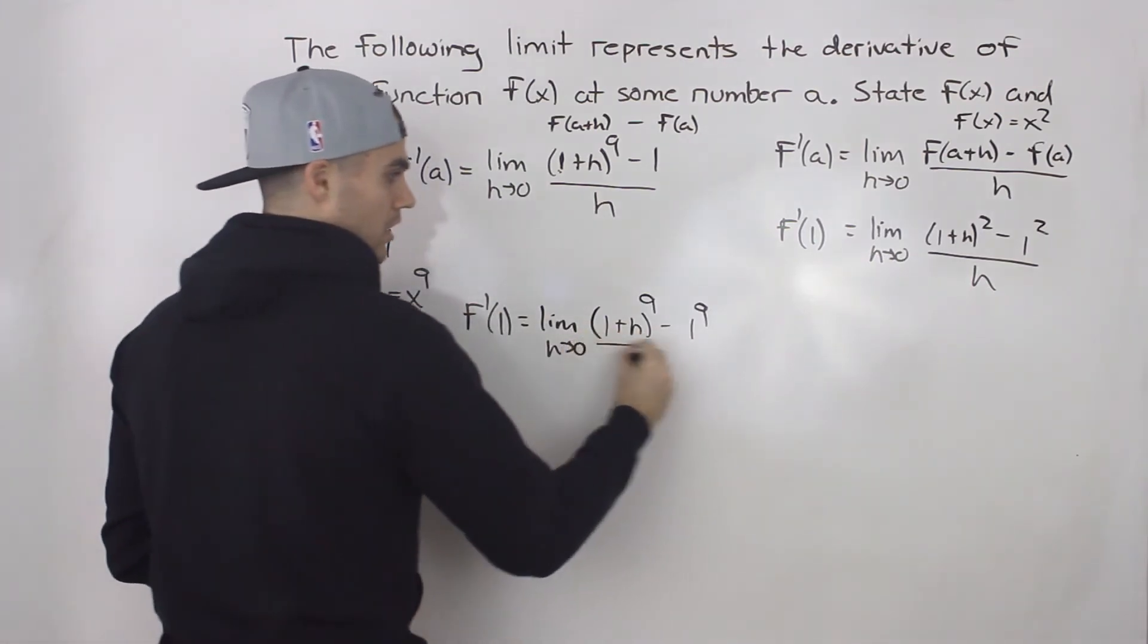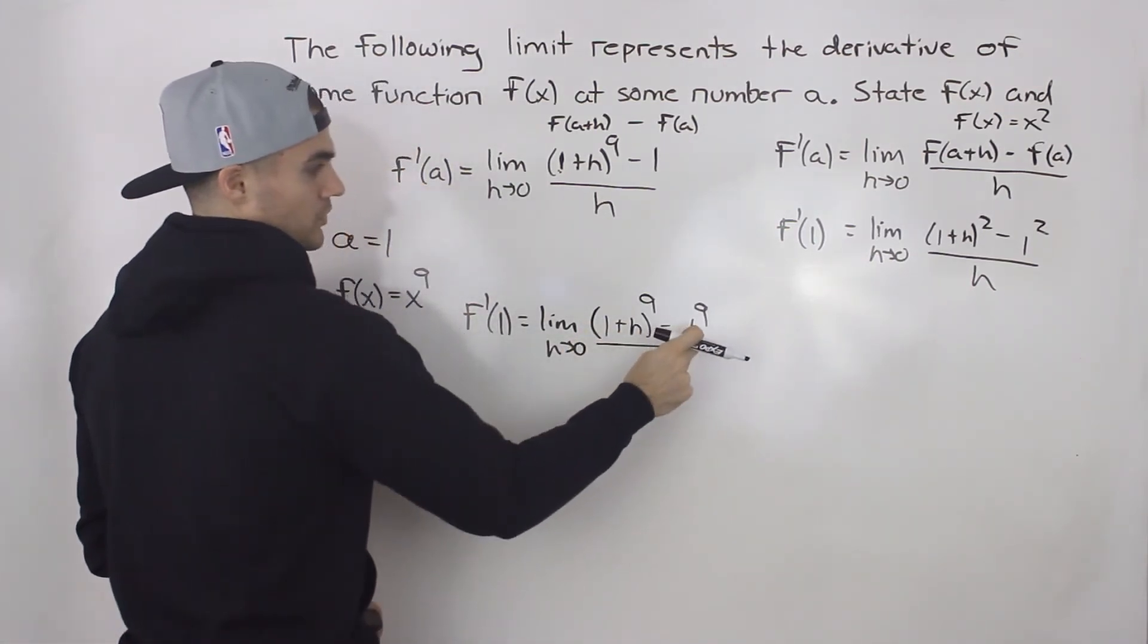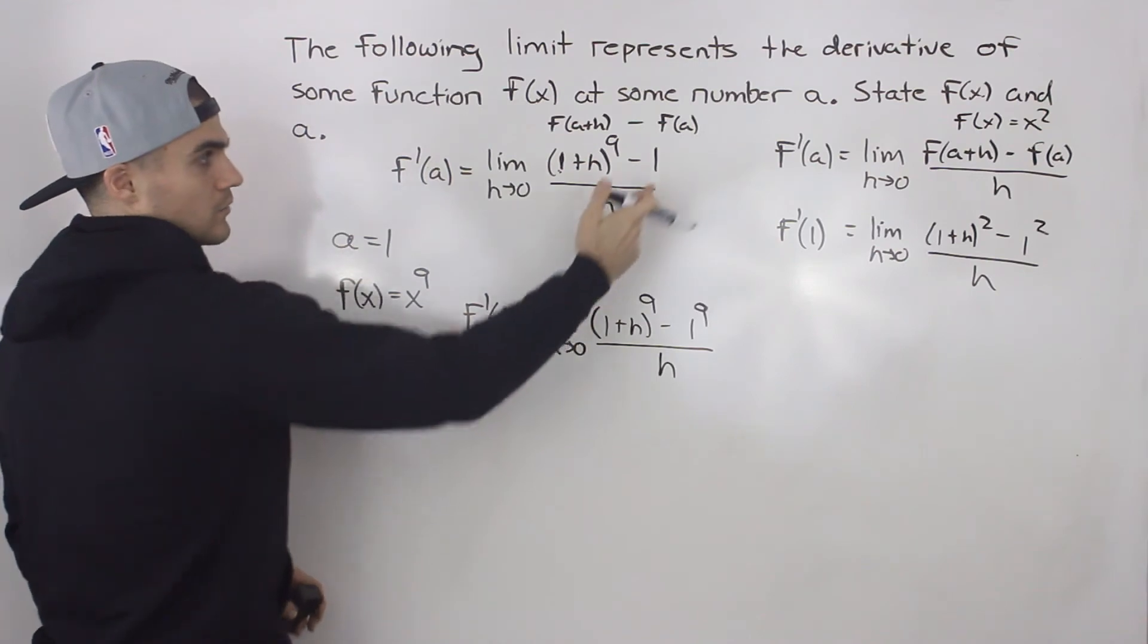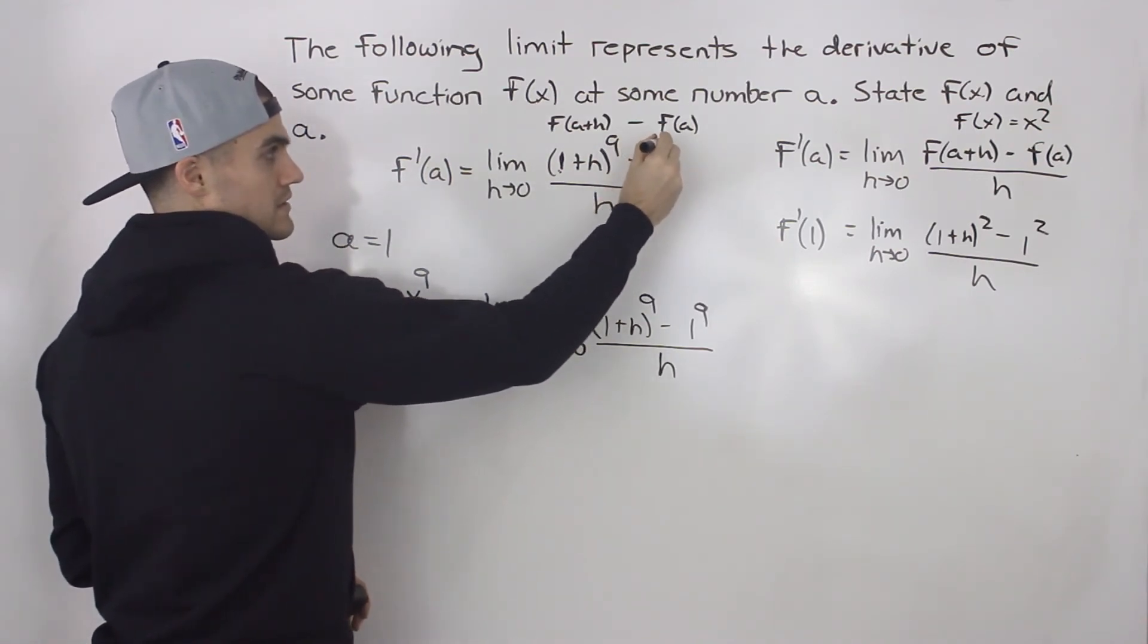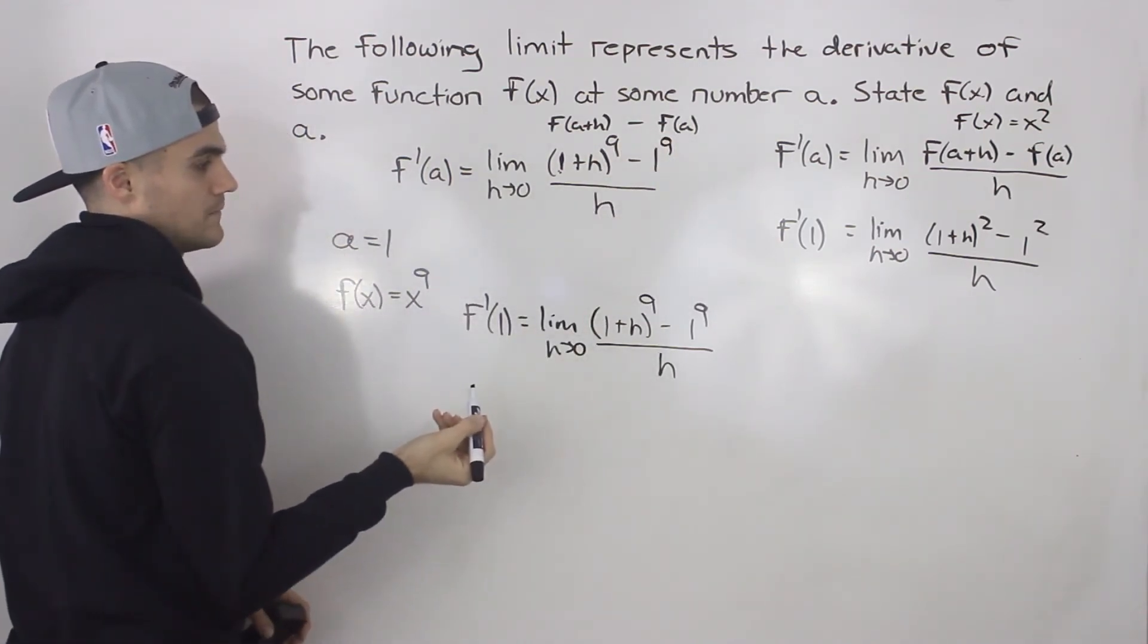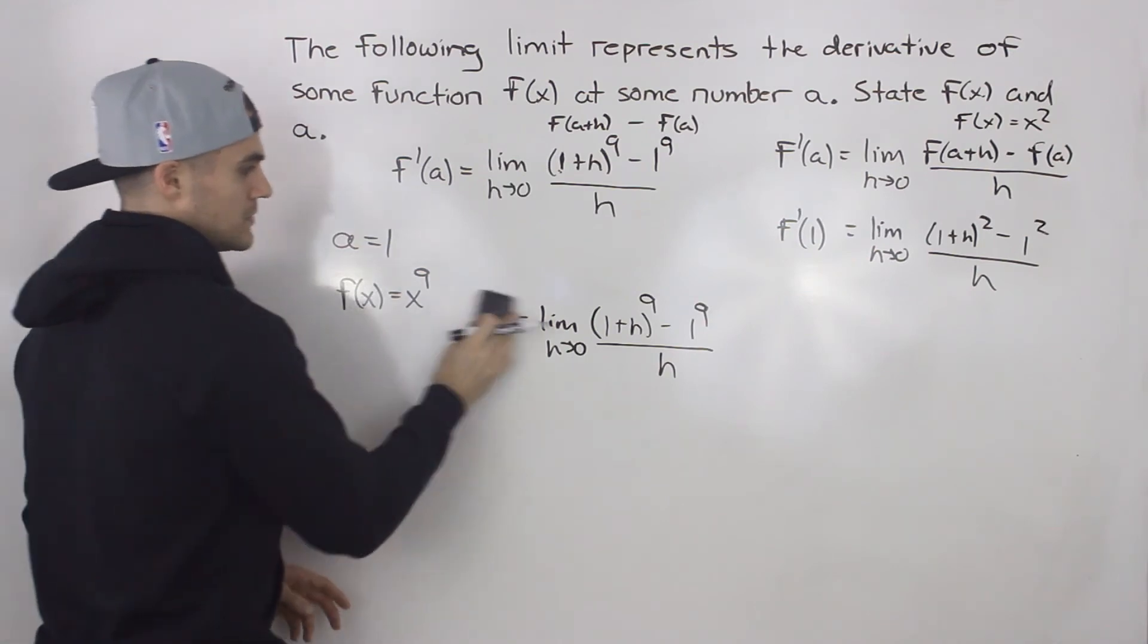f(1) would be here all over h. Notice 1^9 is just 1, which is what we get here. Or we can rewrite this one here as 1^9.